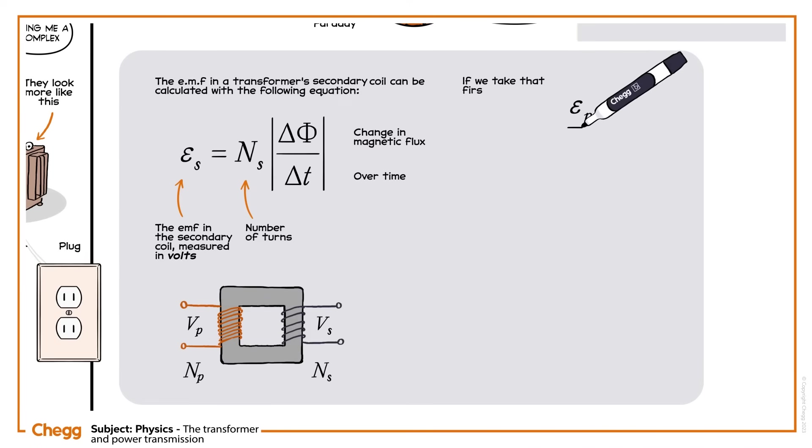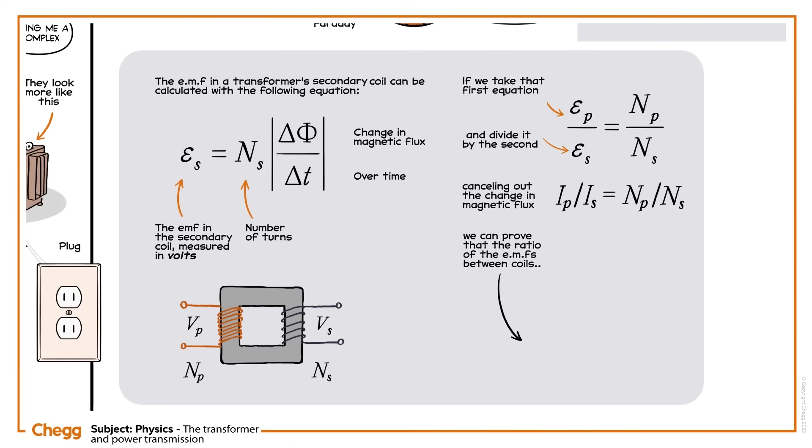Now, if we take that first equation and divide it by the second, canceling out the change in magnetic flux, we can prove that the ratio of the EMFs between coils matches the ratio between the number of turns on the coils.